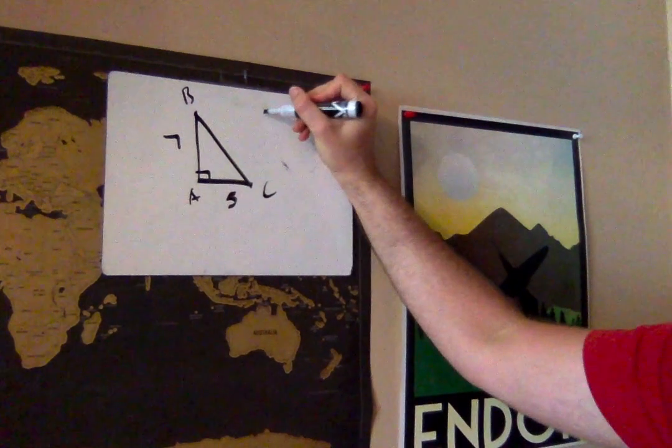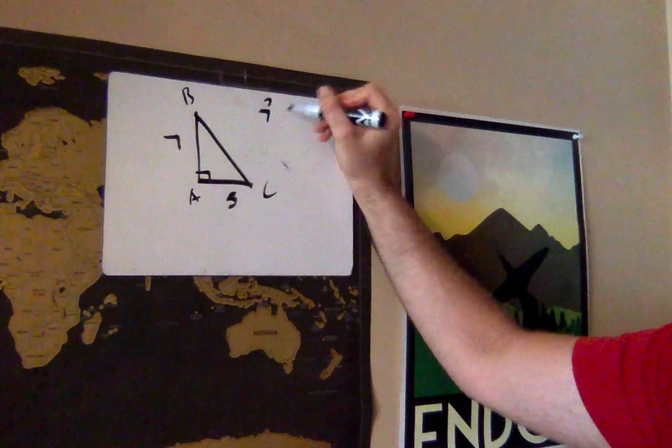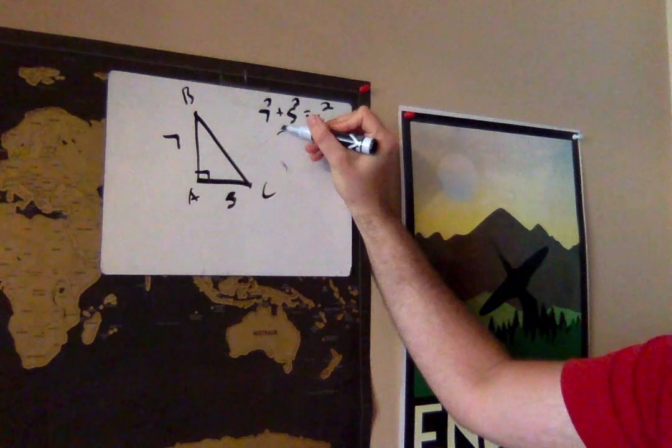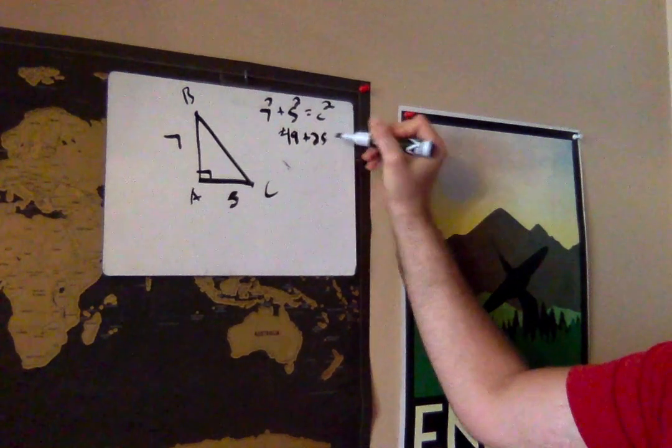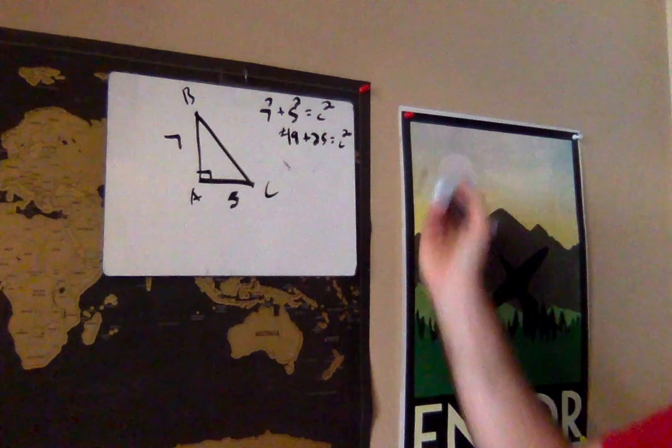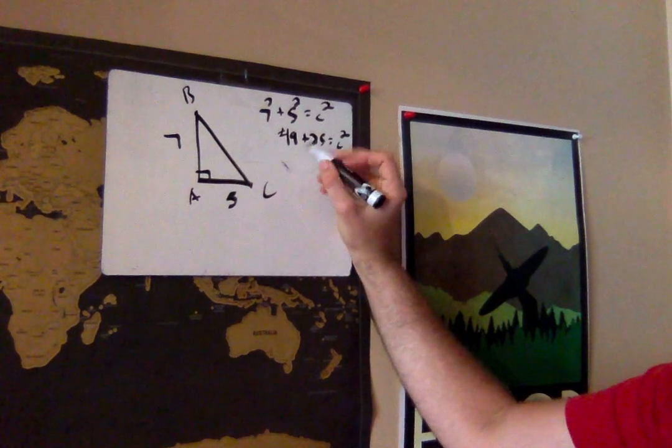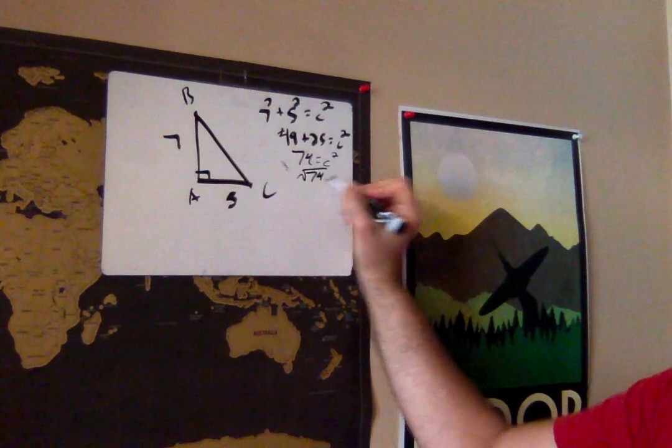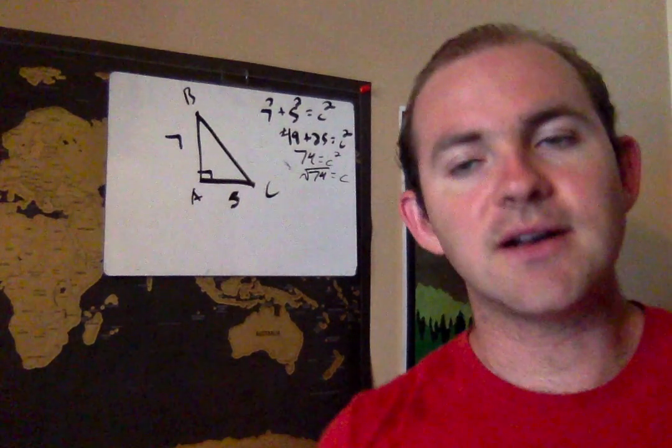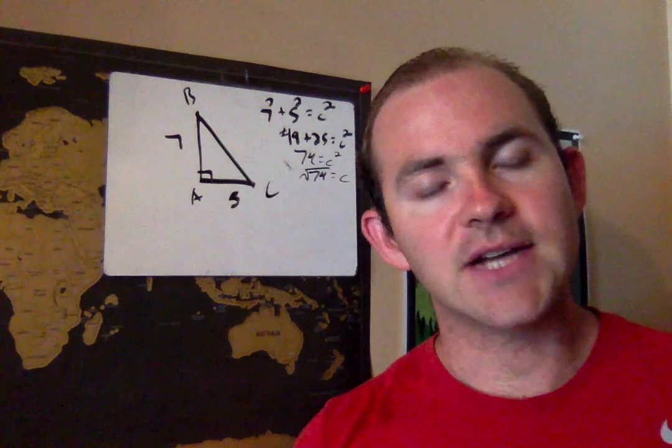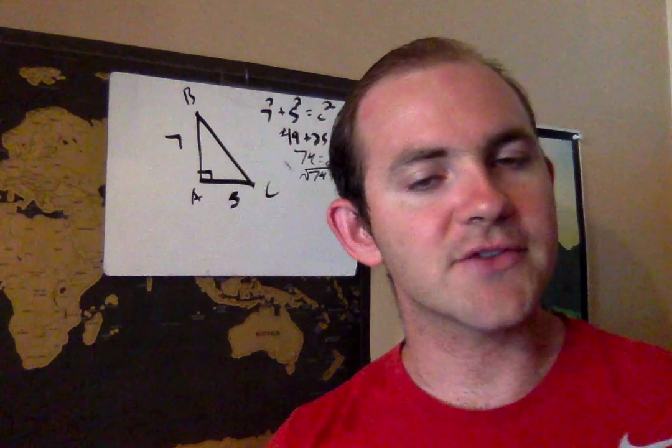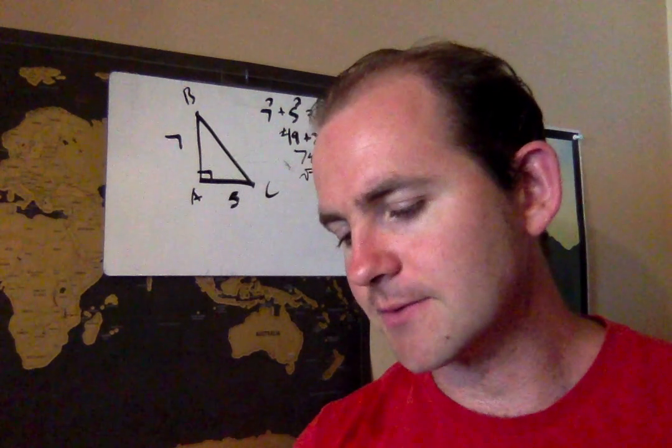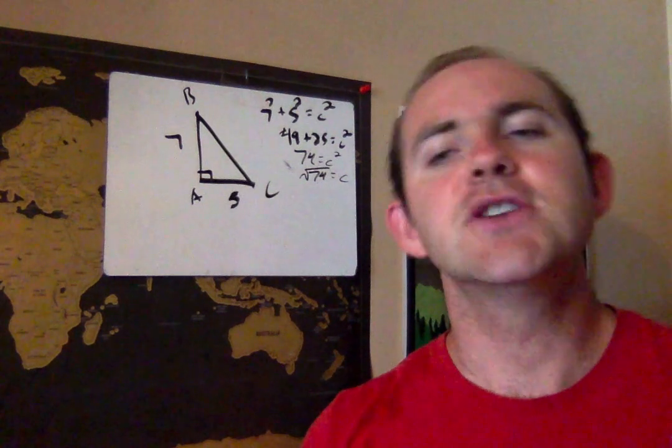For part A, I would simply do A squared plus B squared equals C squared. That means 7 squared plus 5 squared equals C squared. So 49 plus 25 equals C squared. Let's hope that I can add correctly. I believe that that's 74 equals C squared. And so I can leave it as root 74 equals C. Of course, on the test, they may ask you to actually round it to the nearest whole number or the nearest tenth or something like that.